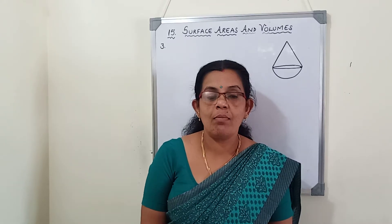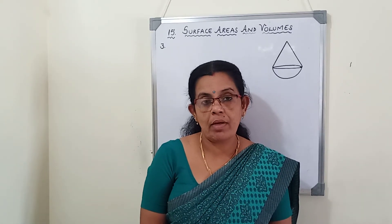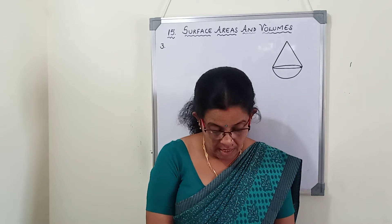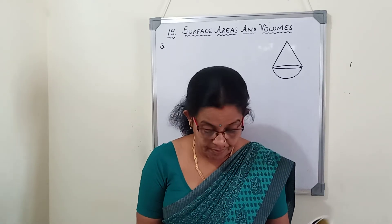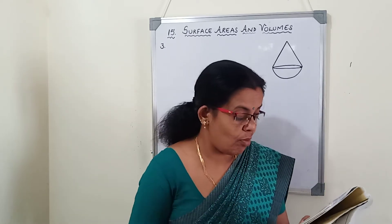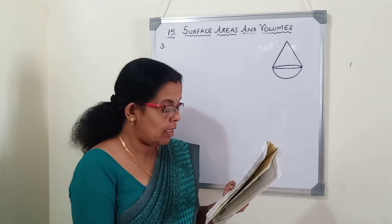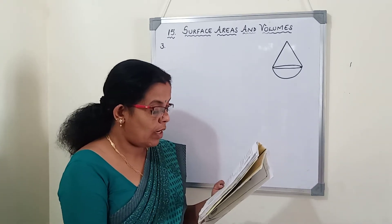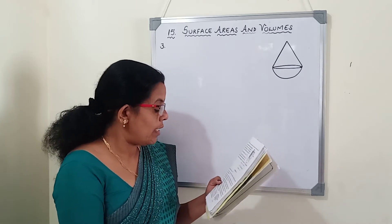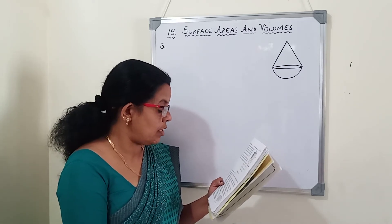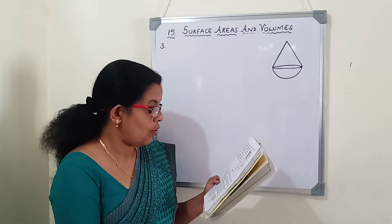Good morning children. Welcome back to Max class. We will continue with the same exercise — Exercise 15.1, third question. A toy is in the form of a cone of radius 3.5 cm mounted on a hemisphere of the same radius. The total height of the toy is 15.5 cm. Find the total surface area of the toy.